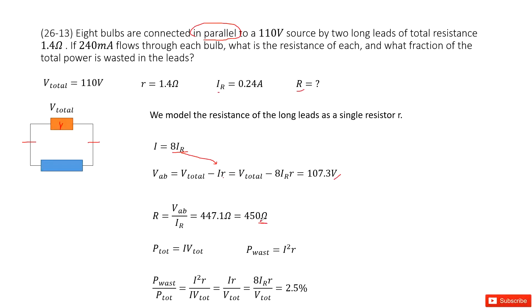Next question. What fraction of the total power is wasted in the leads? So, it looks like first we need to get the total power. Second, we need to get the wasted power in leads. Total power, so easy. Just use the total current times the total voltage. It is given.